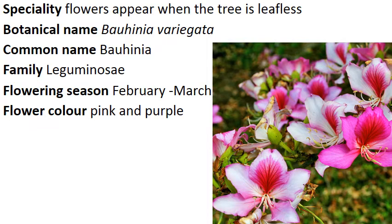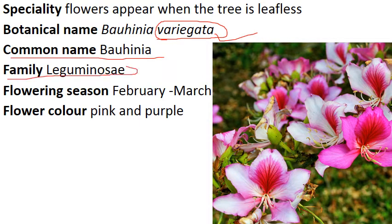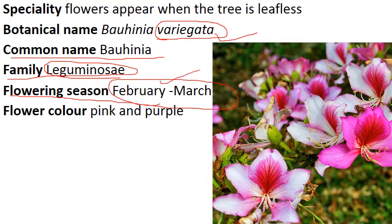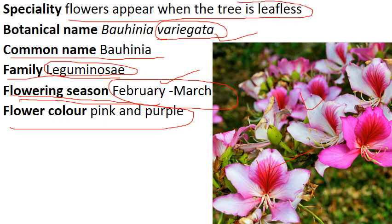Now comes to Bauhinia variegata. As the name suggests — variegata means various-colored flowers. Common name is Bauhinia. Family is Leguminosae, same Pea family. Flowering season is February to March, same as summer season. Flower color is pink and purple — you can see pink flower, purple flower, and some white also. As the name suggests variegata means various colors. Special character: flowers appear when the tree is leafless — the leaves fall first, then flowers appear. In some places of India, the leaves of this species are used as leafy vegetables; they are edible in nature.